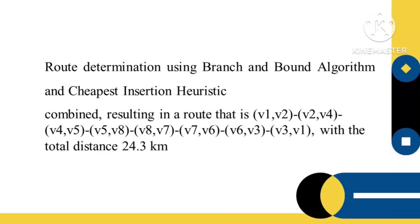We get a resulting route that is from V1 to V2 and then to V4 and then V5 to V8 and then V7 and then V6 and then V3 and return to V1 with the total distance of 24.3 kilometers. This route using the combination algorithm is more effective than only using Branch and Bound algorithm.